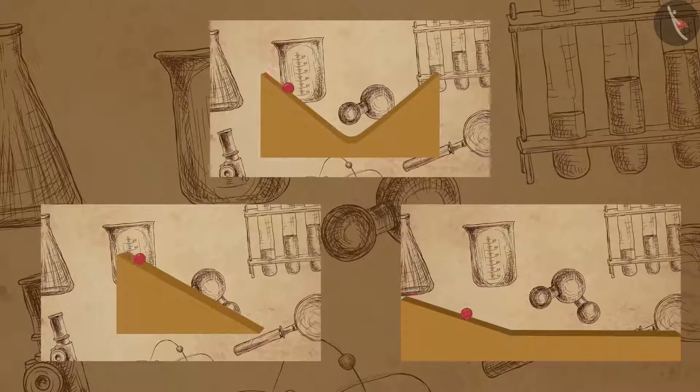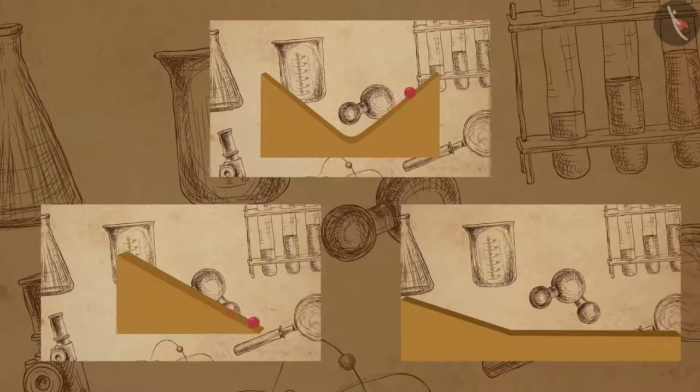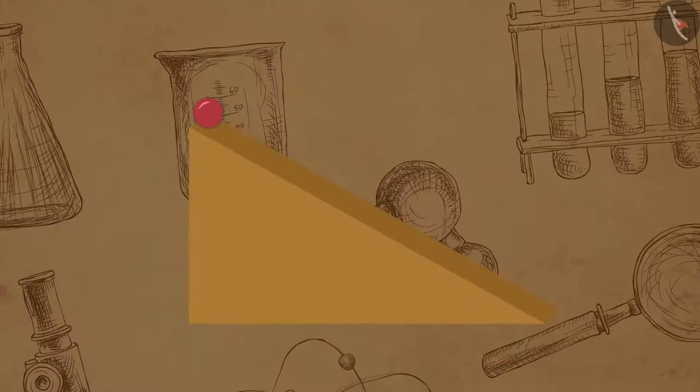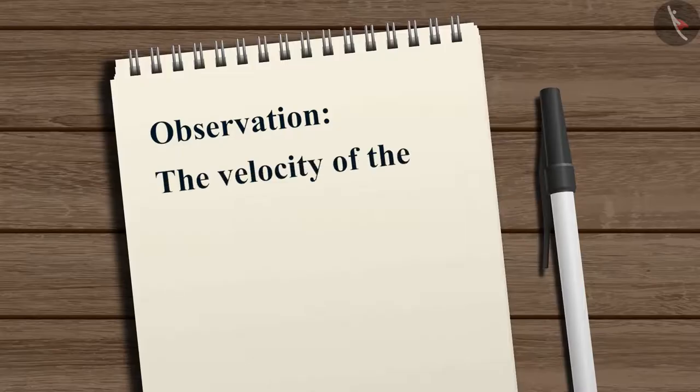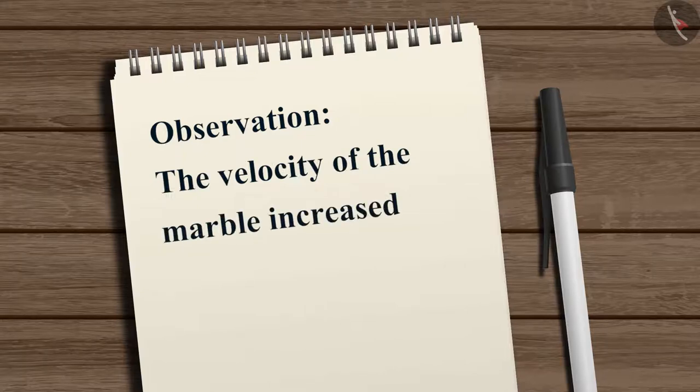Let us take a look at an experiment performed by Galileo. He took a marble and released it from the top of an inclined plane. He observed that the velocity of the marble increased while rolling down.